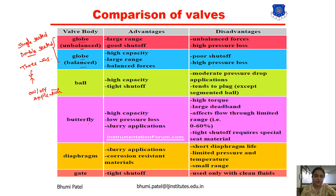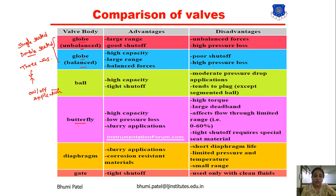The butterfly valve has a similar construction to the ball valve. It is used for high capacity, low pressure drop, and its main application is slurry service. The disadvantage is it requires high torque, has a large dead band, and affects flow through a limited range of 0 to 60 percent. Tight shutoff requires special seat material, so for special applications a special butterfly valve material must be used.